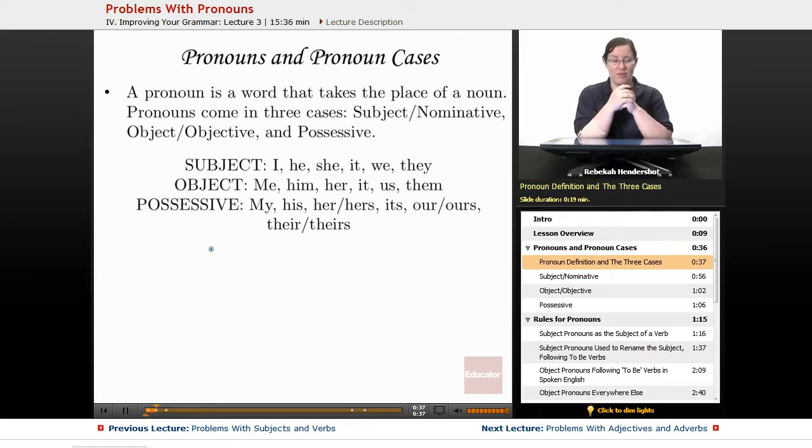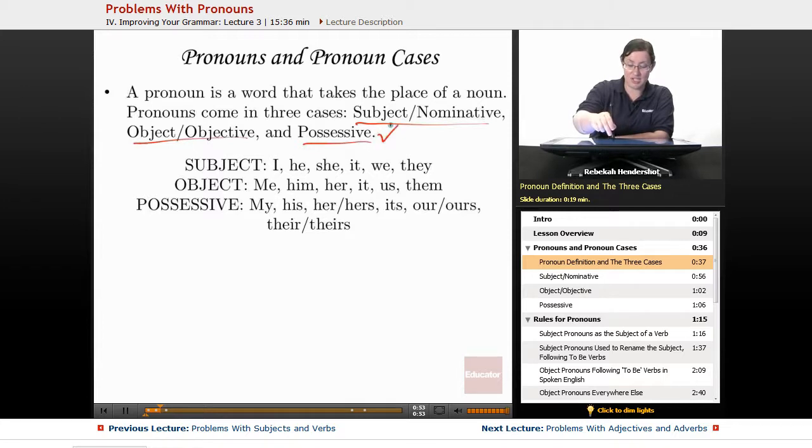Pronouns and pronoun cases. A pronoun is a word that takes the place of a noun. They come in three cases, three different forms: the subject case, also called the nominative case; the object case, also called the objective case; and the possessive case, which doesn't have another name because it doesn't need one.